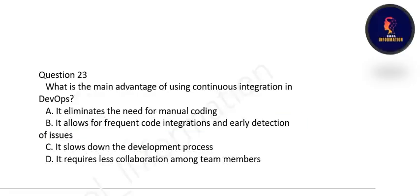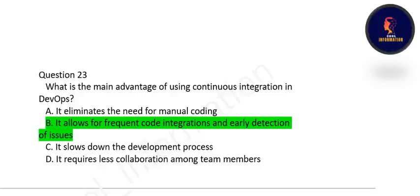Next question: what is the main advantage of using continuous integration in DevOps? Its main advantage is that it allows for frequent code integration and early detection of issues. Option B is correct.